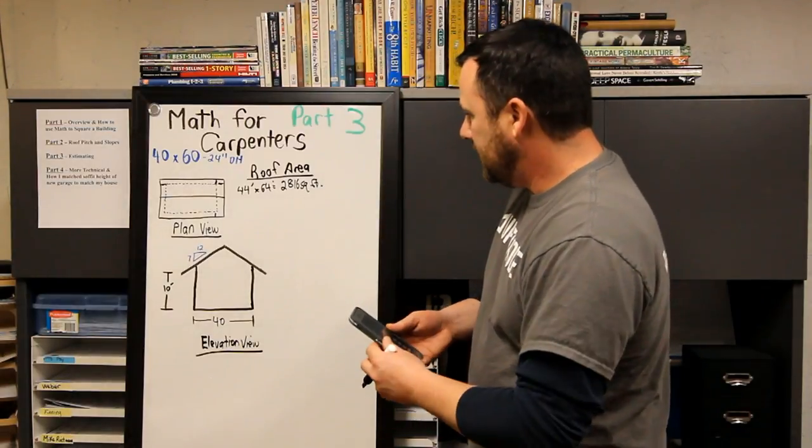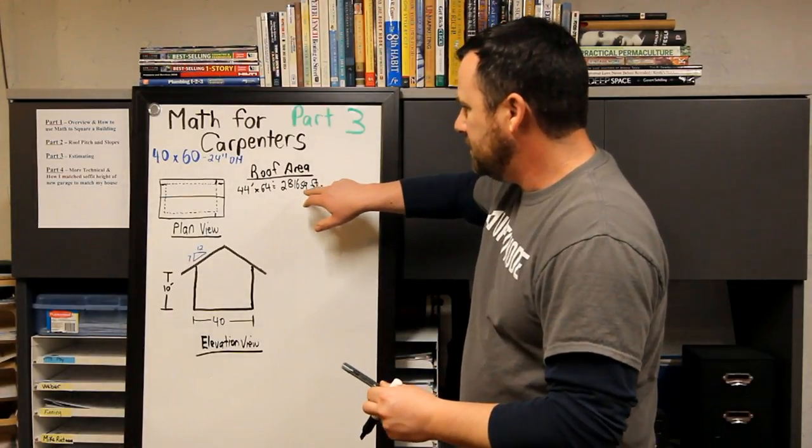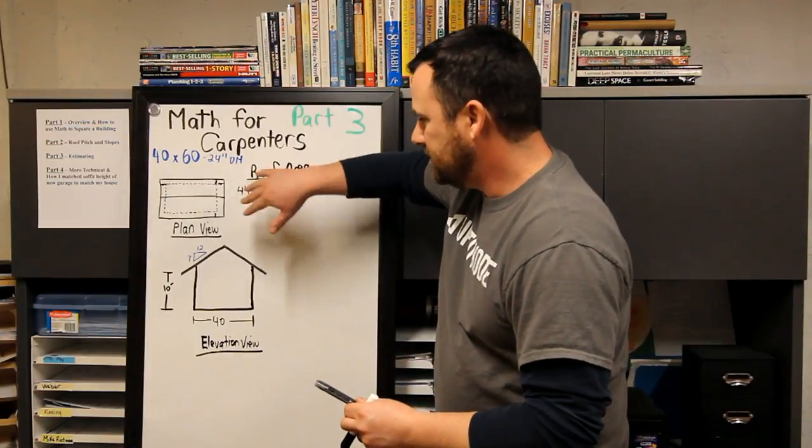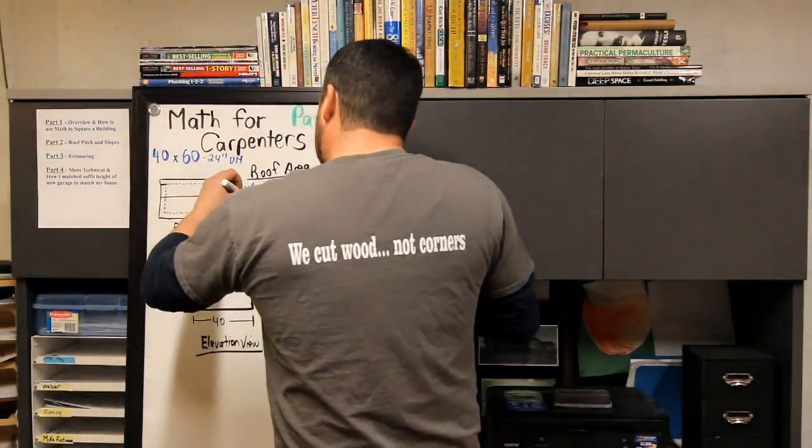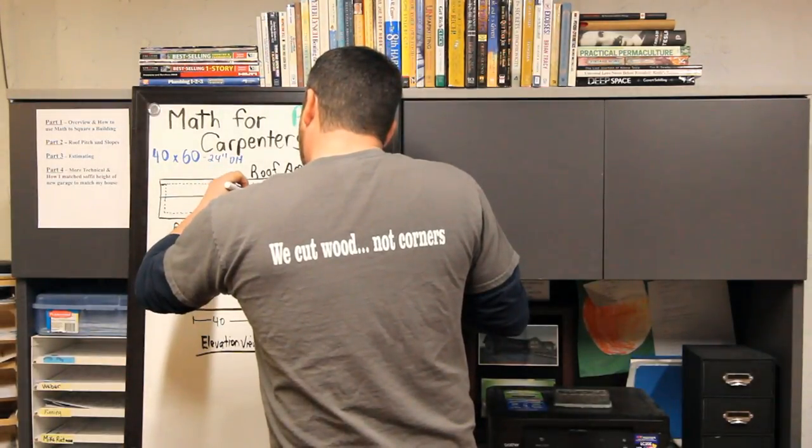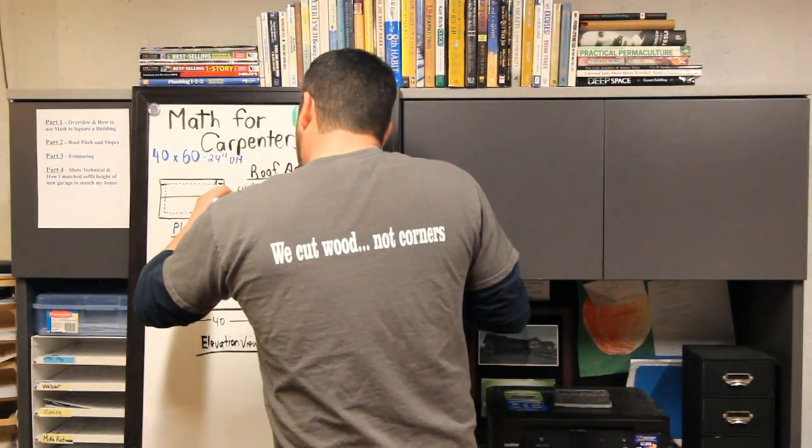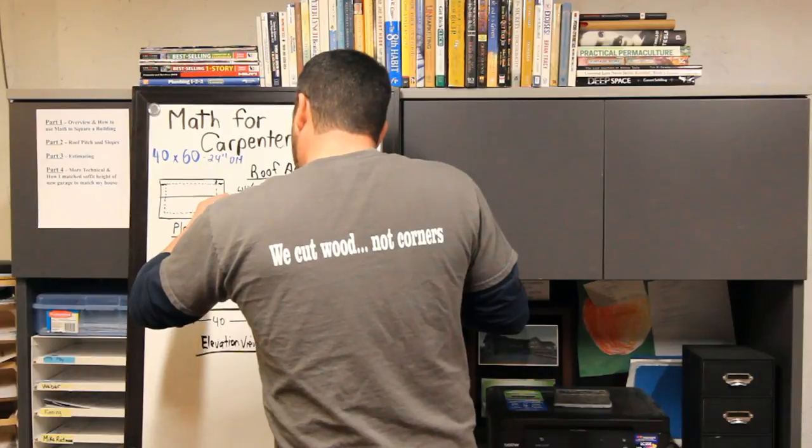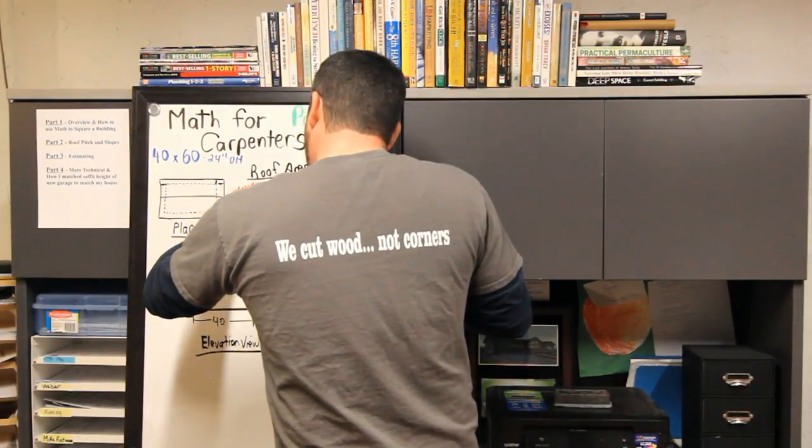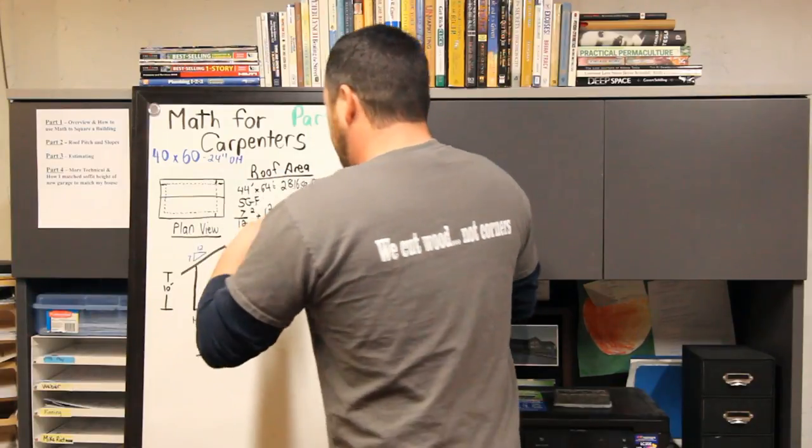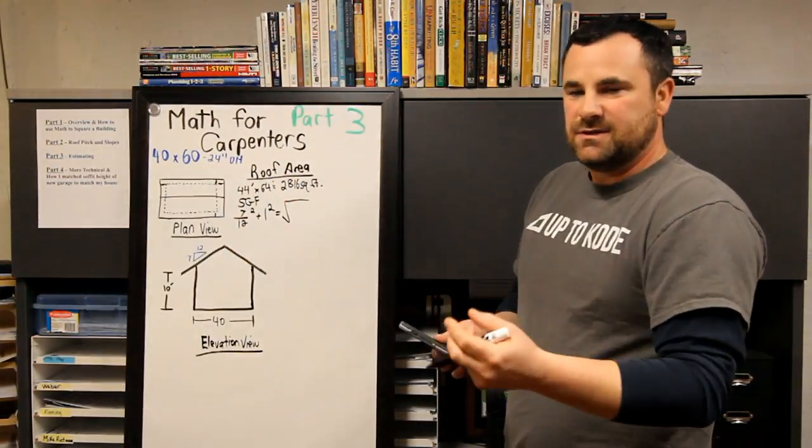That's if your roof is flat. Now we have to times your square footage by your slope gain factor. So your slope gain factor is your rise over your run. So 7 over 12 is our pitch squared plus 1 squared equals, and then once you get that equals number, you have to take the square root of that.